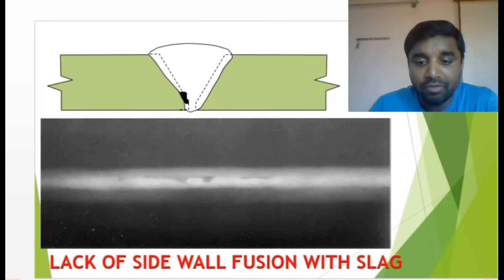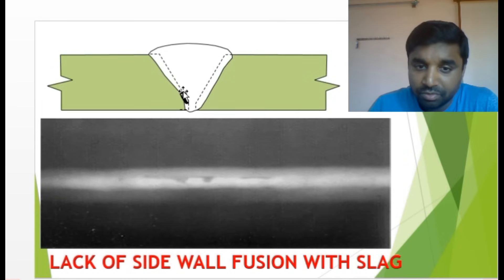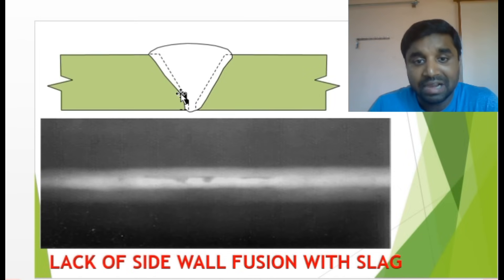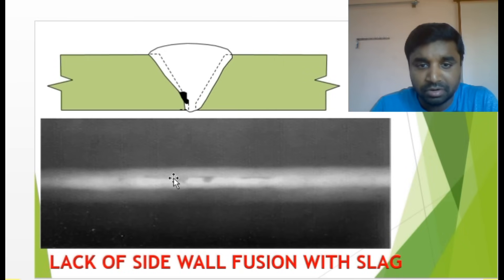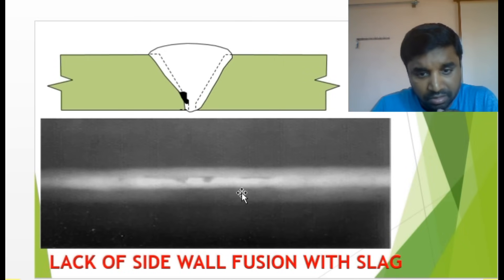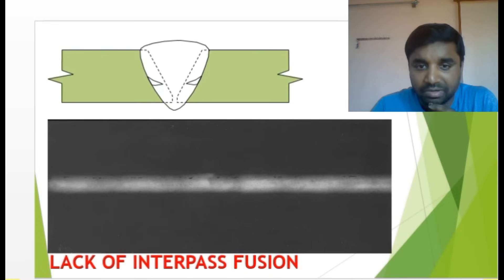Lack of sidewall fusion with slag — there is no fusion at the sidewall and slag is also present. In the radiograph, one side shows no fusion and you can also see the slag. That is how lack of sidewall fusion with slag looks.